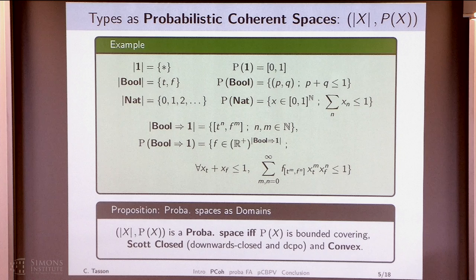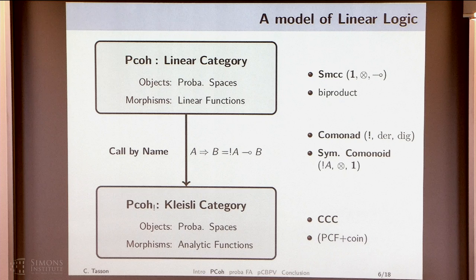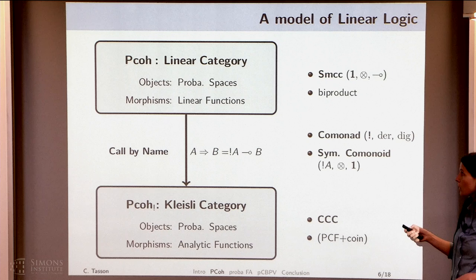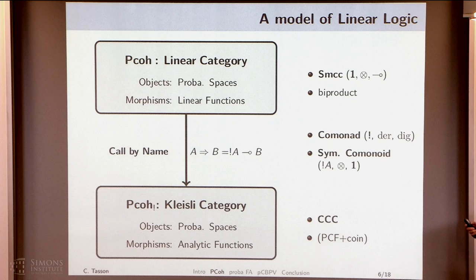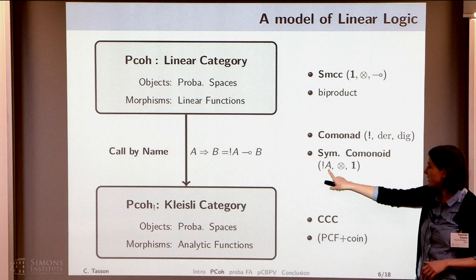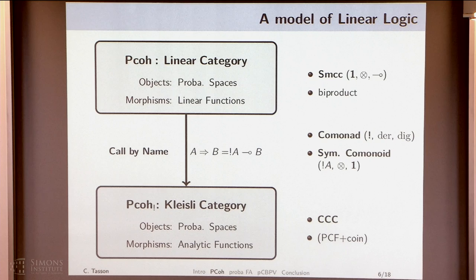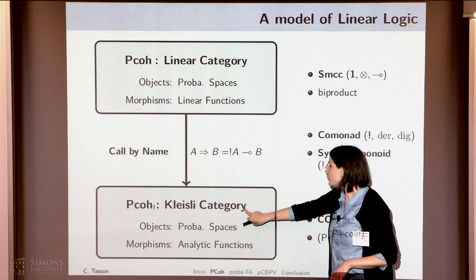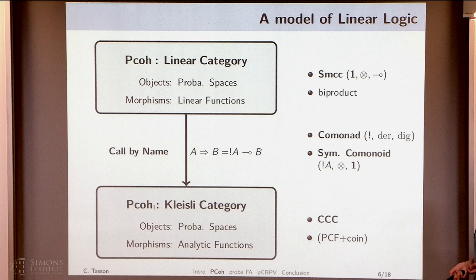Before going to the morphisms, I want to give you the general framework of linear logic. In linear logic, you have a linear category whose objects are probabilistic spaces and morphisms are linear functions. This category is a symmetric monoidal closed category. We have finite products, and you can build on this category an exponential which is a comonad, such that for each object A, bang A is equipped with a symmetric comonoidal structure.